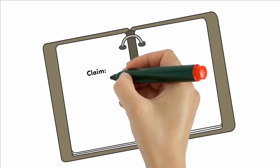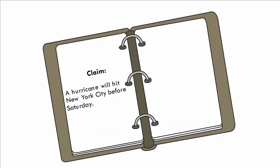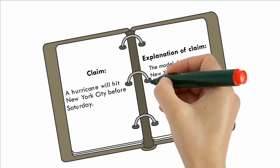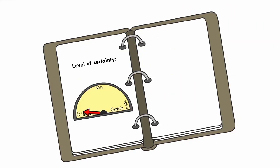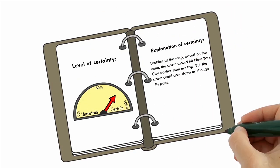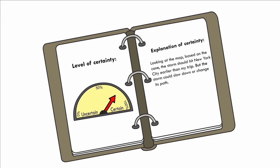So, what did we learn? Scientific arguments start with a claim: a hurricane will hit New York City before Saturday. Then there is an explanation of the claim, which includes evidence and reasoning: the model shows that New York City is within the forecast path of the storm, and if the storm continues on the forecast path, it could hit New York City by Saturday. The level of certainty is 80%. Finally, there is an explanation of certainty: based on the cone, the storm should hit New York City earlier than my trip, but the storm could slow down or change its path.